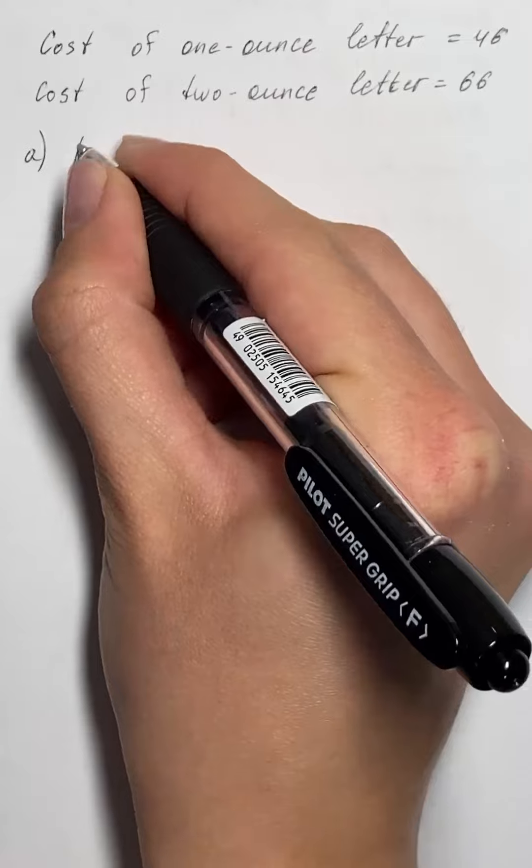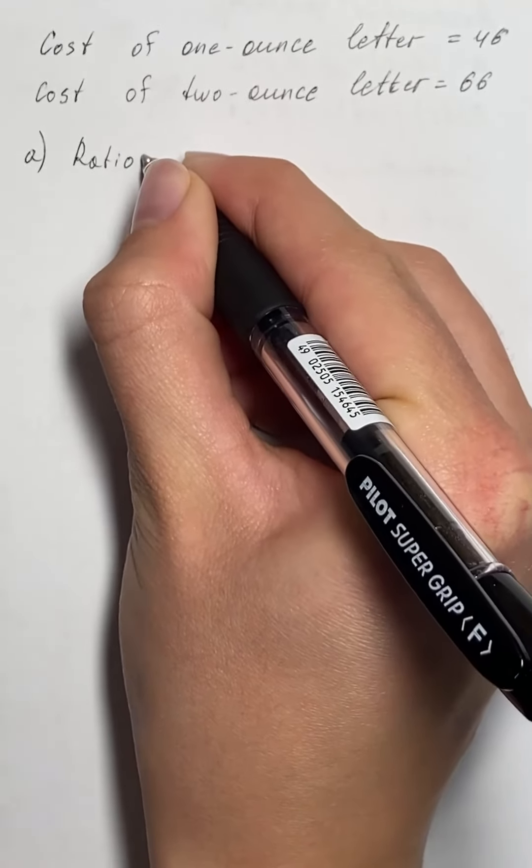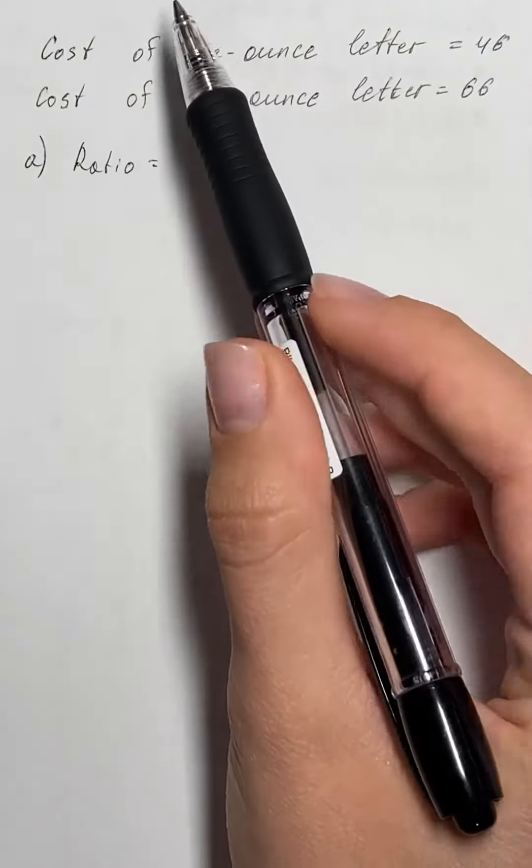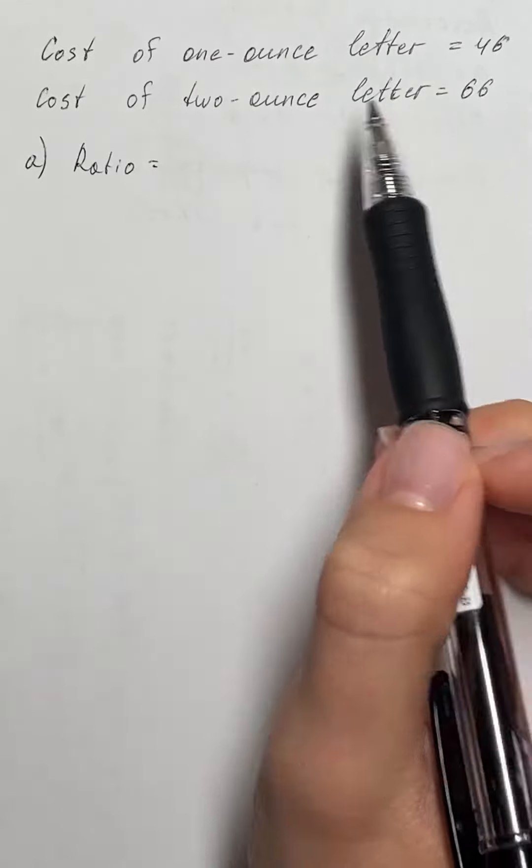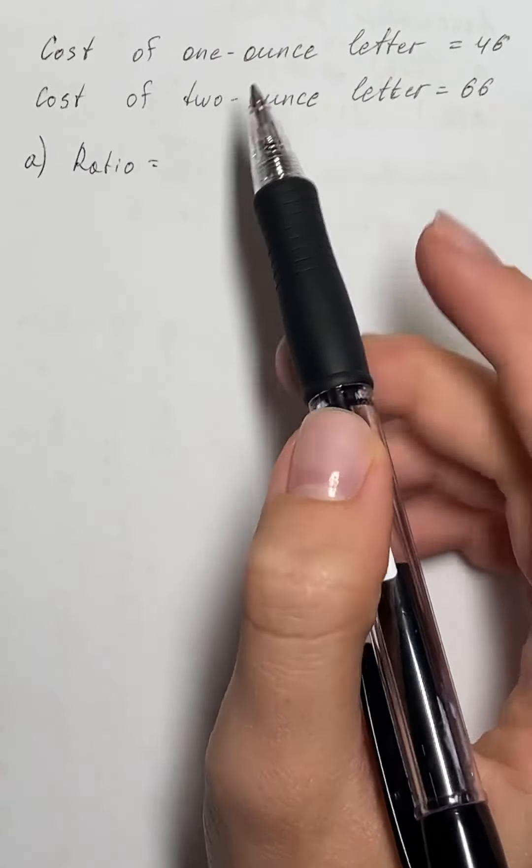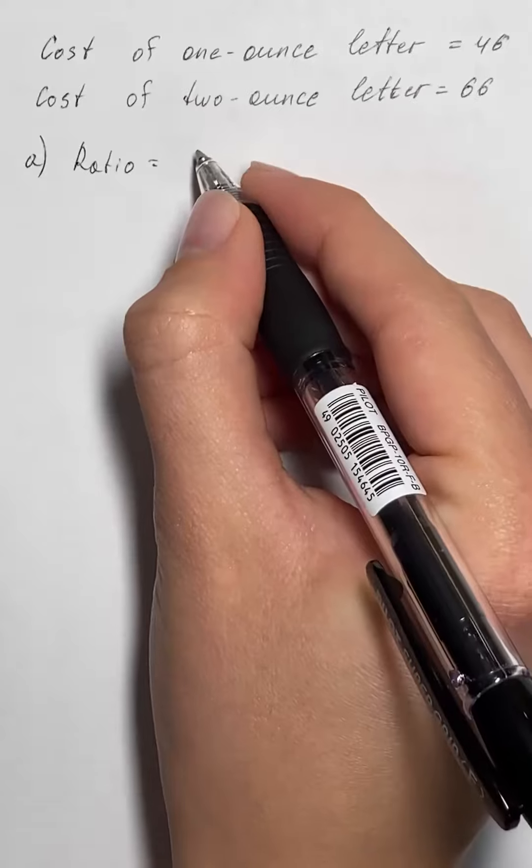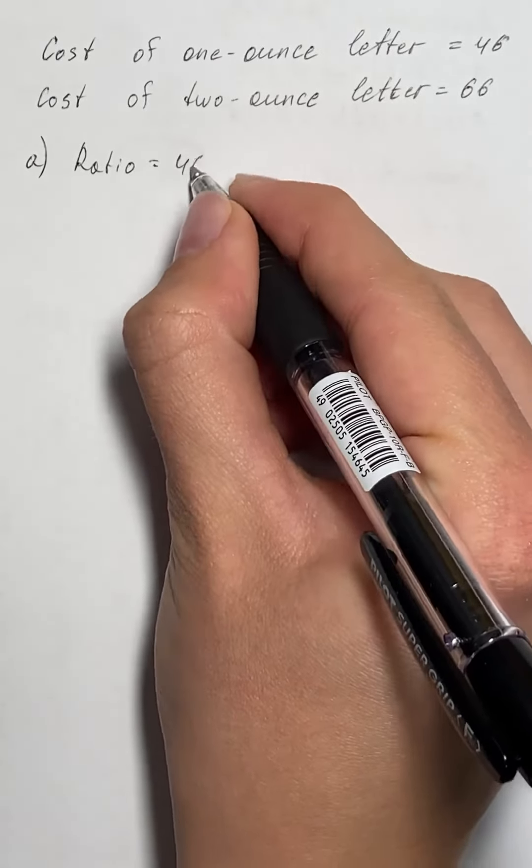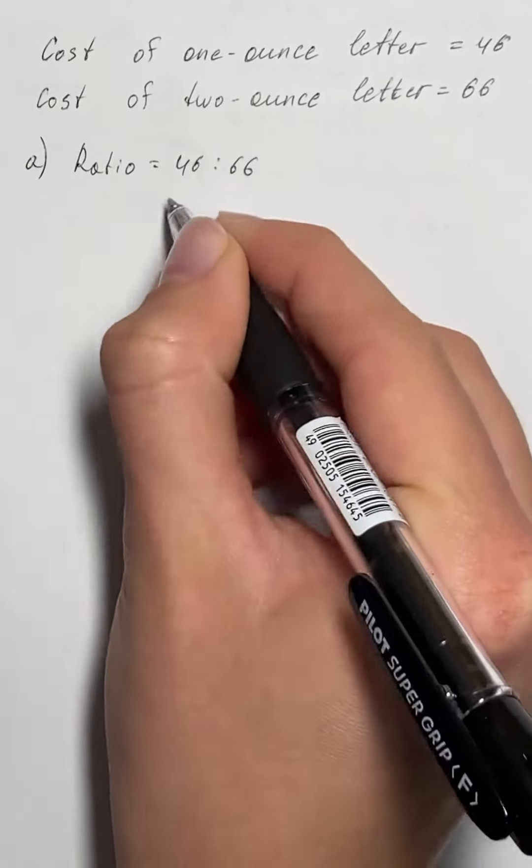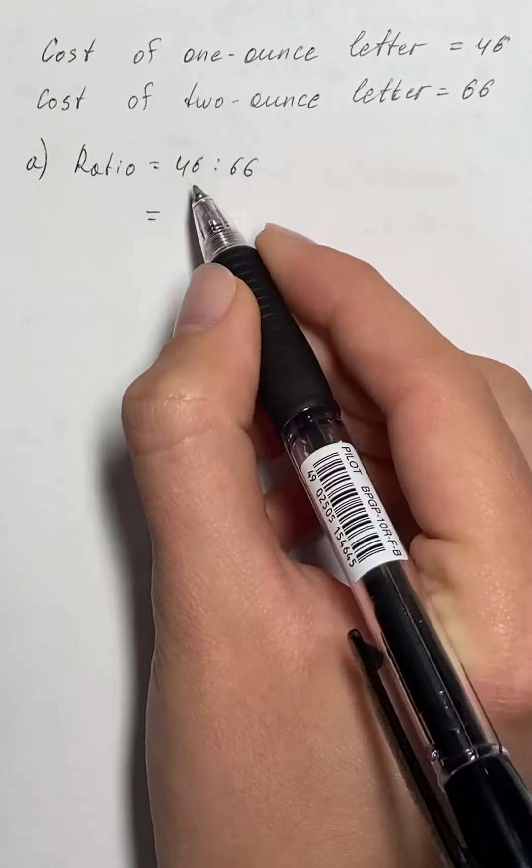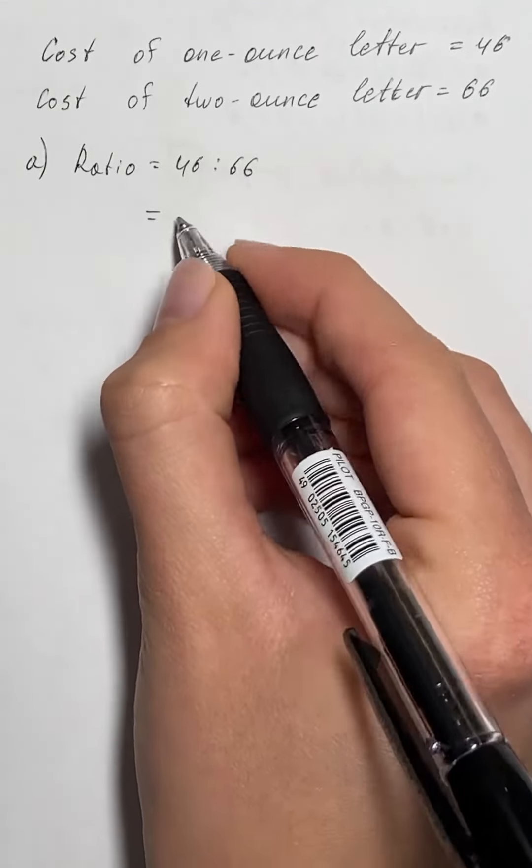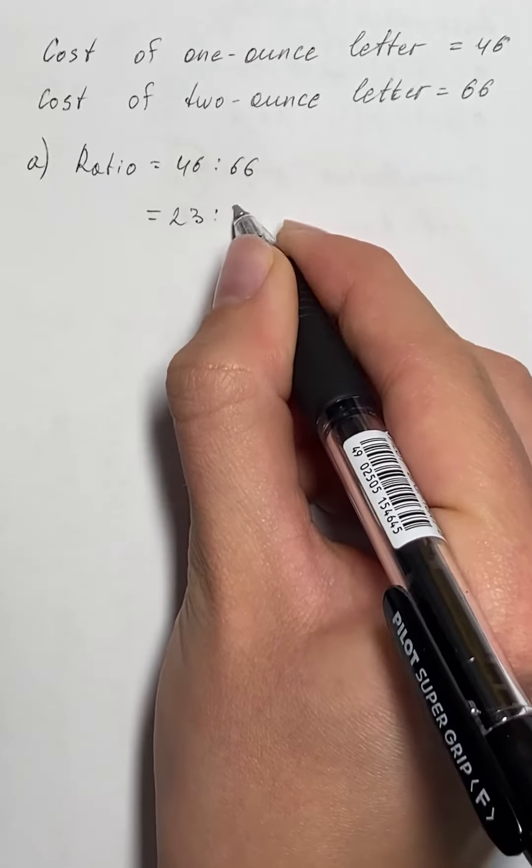So our ratio is going to be the cost of one-ounce letter to cost of two-ounce letter. Therefore it is 46 to 66 and we can simplify it. So we divide both sides by two and we get 23 to 33.